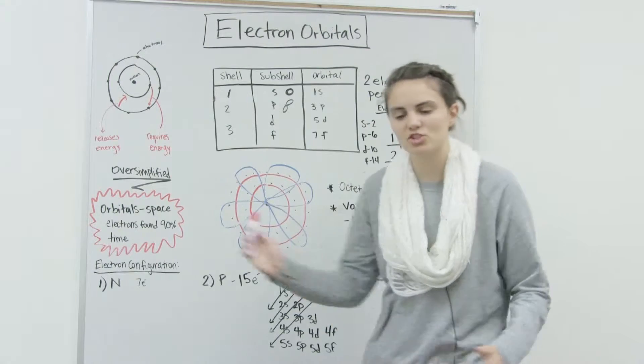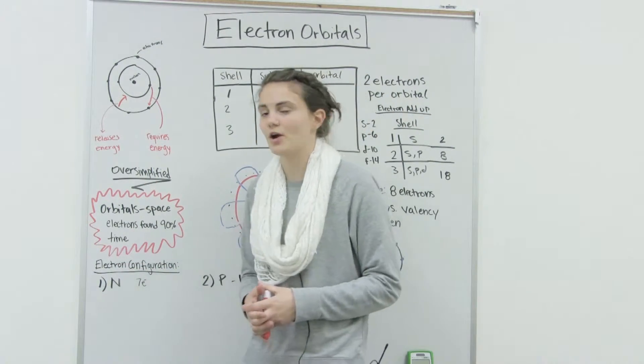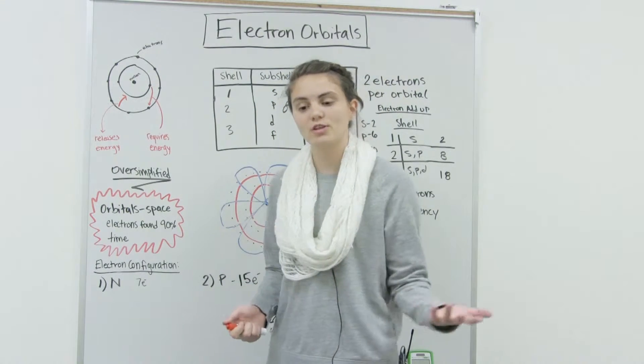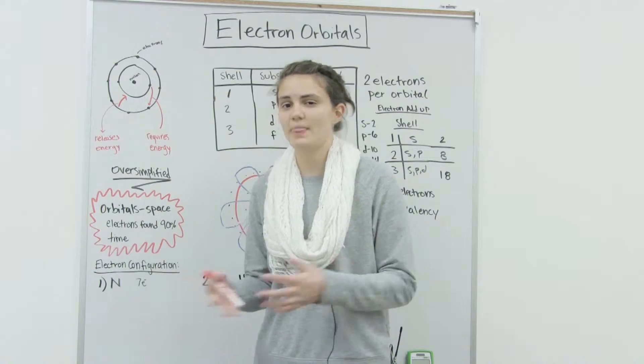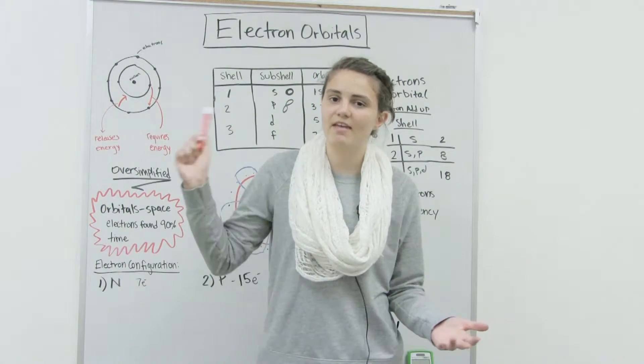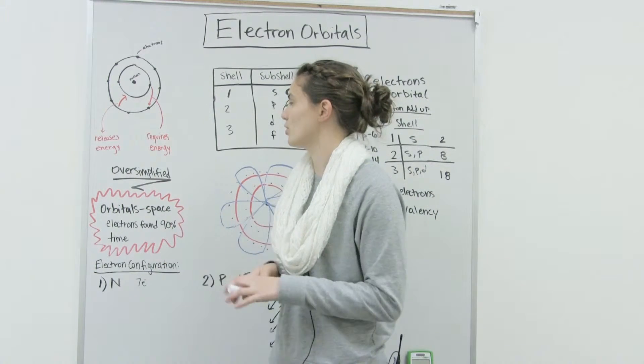So first off, let's just review an atom really fast. Every atom or element is made of three parts. It has electrons, protons, and neutrons. Protons are positive, neutrons are neutral, and they together make up the nucleus.